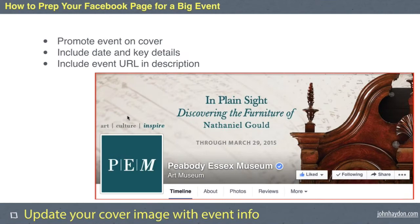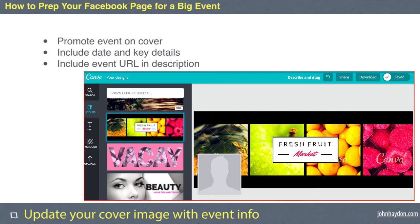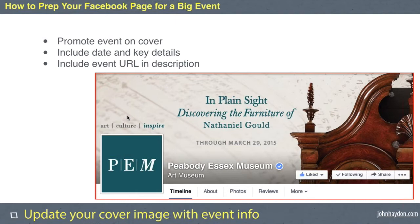Next, update your cover image with event information. Include the date and key details — a spokesperson, celebrity, giveaway, or silent auction — to make the event look attractive. I recommend using Canva (canva.com), which has Facebook cover templates that make you look like a graphic design ninja. When you upload it, click on the cover and in the photo description include the event URL or registration page link.